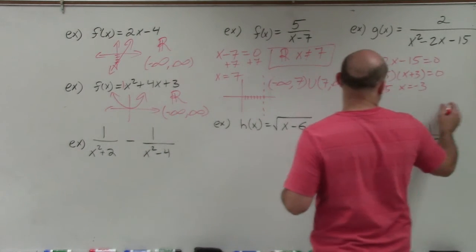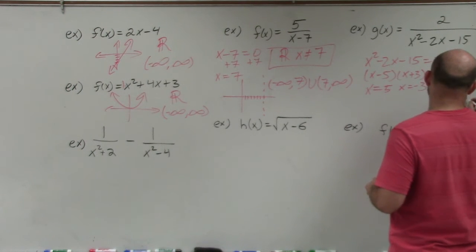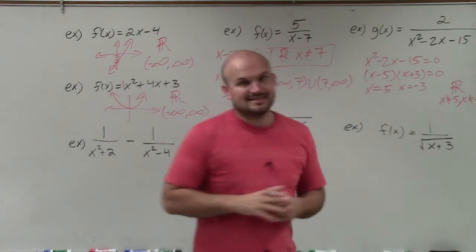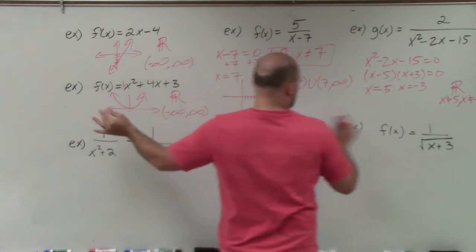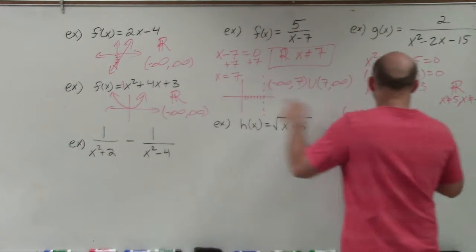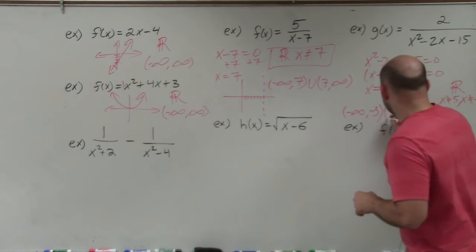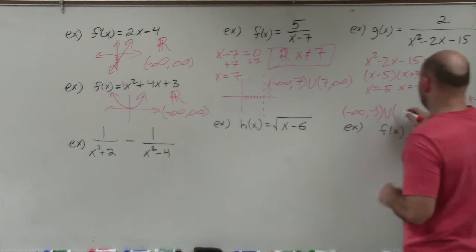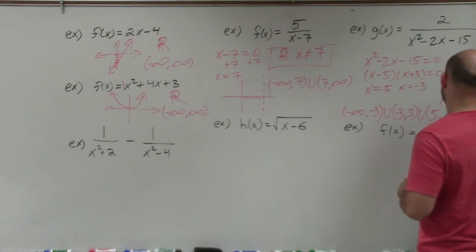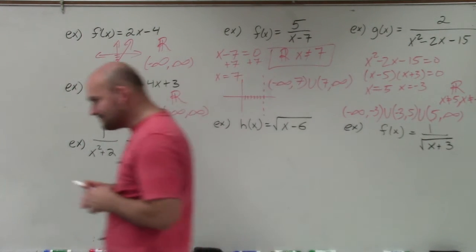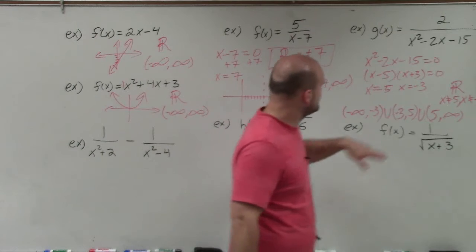In interval notation, we always start from negative infinity. We go all the way to negative three — it doesn't contain negative three, so that's a parenthesis. Union that with negative three to five. Union that from five to infinity. So the domain in interval notation is negative infinity to negative three, union negative three to five, union five to infinity.